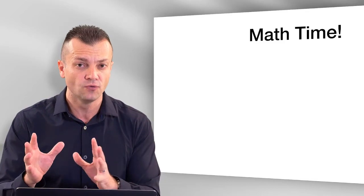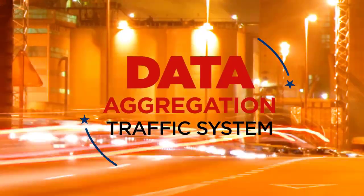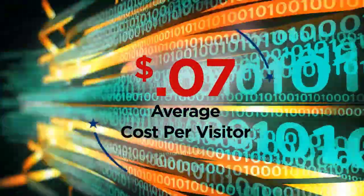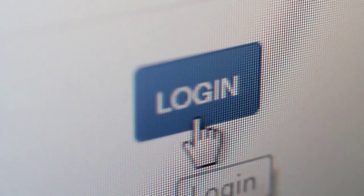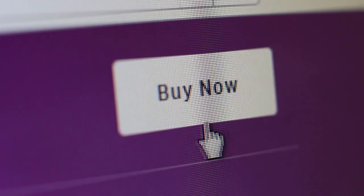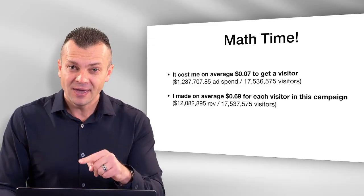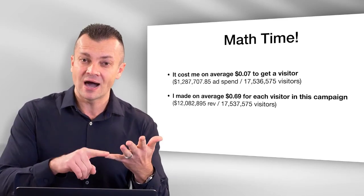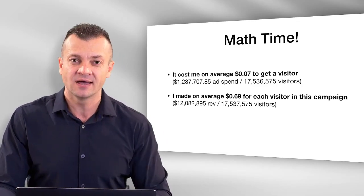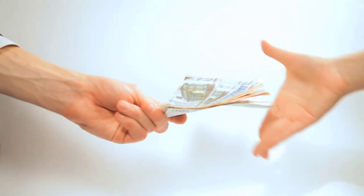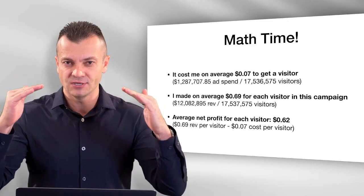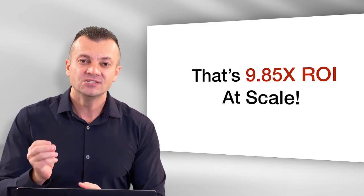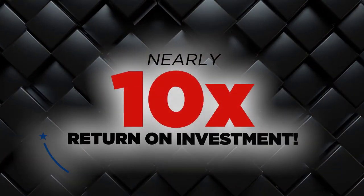Let me simplify this and show you what this can do for your business if you implement the data aggregation business model. Would you pay seven cents to acquire a visitor to your website, your product, your business, or whatever you're promoting? Of course. I paid seven cents and made 69 cents for every visitor, regardless if they opted in or engaged with me or not — every single visitor was worth 69 cents to me. My average profit after expenses was 62 cents per visitor. This generated almost 10 times return on investment for this particular campaign.